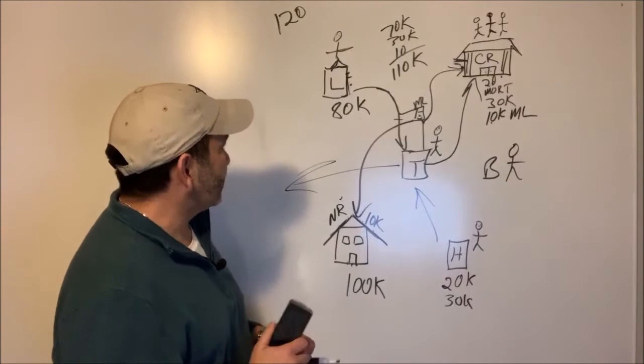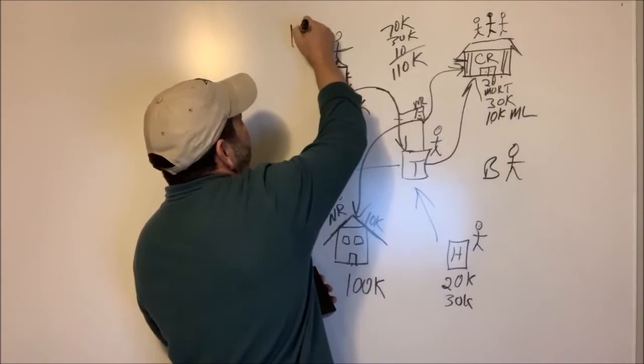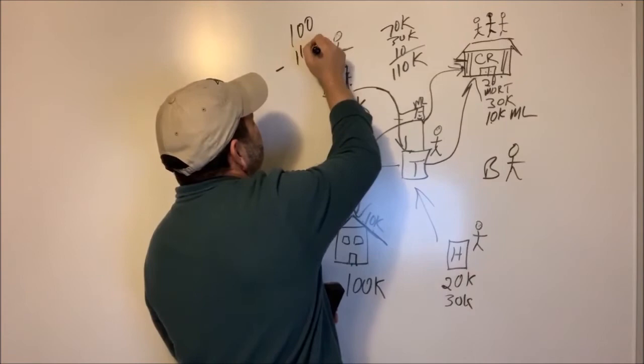But what happens if the market value of that house drops and he didn't realize all was going on, and now it's worth $100K and he owes $110K? Now Henry's in a position where a lot of people call it upside down with this house. He owes more than what he can get for it. Can he still sell it?